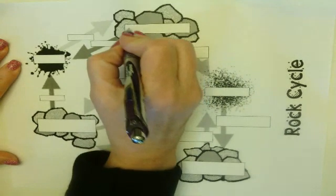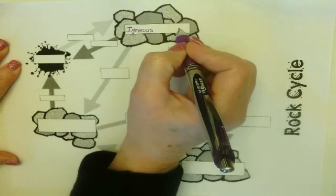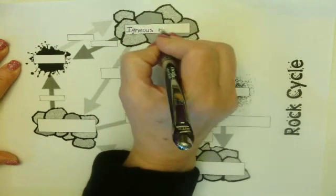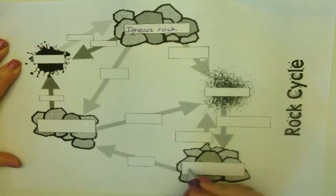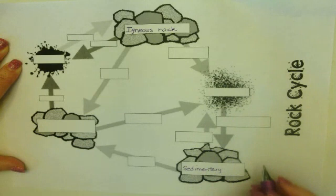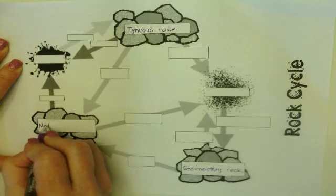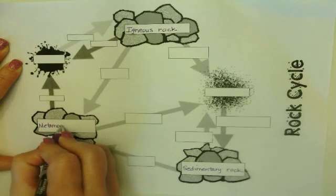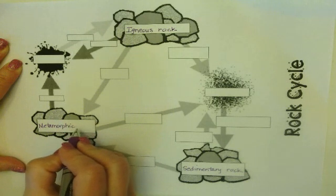The first rock type is called an igneous rock — we'll put that at the top. It's spelled I-G-N-E-O-U-S. The next one is a sedimentary rock, spelled S-E-D-I-M-E-N-T-A-R-Y. And the last one is the metamorphic rock, spelled M-E-T-A-M-O-R-P-H-I-C.